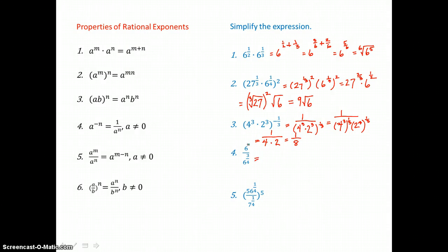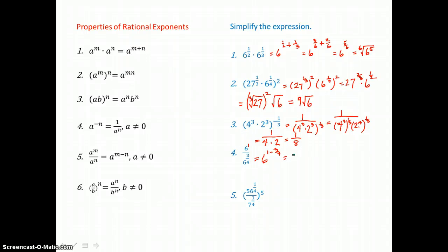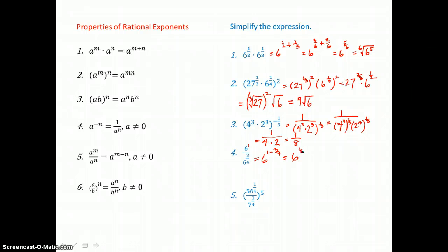In problem 4, we have 6 to the 1st power over 6 to the 3 fourth power. Remember dividing like bases, we subtract exponents. And since 1 can be written as 4 fourths, we have 6 to the 4 fourths take away 3 fourths, which is 1 fourth power. And writing that as a root, that's the fourth root of 1 factor of 6.